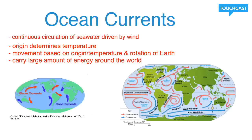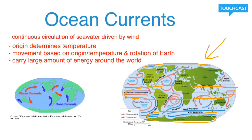So what an ocean current is — it's a continuous circulation of seawater that is driven by wind. And as you can see from the picture, the origin of an ocean current determines its temperature. Warm ocean currents start or originate around the equator, and cold ocean currents originate or start around the poles. How ocean currents move is based on their temperature and the rotation of Earth.